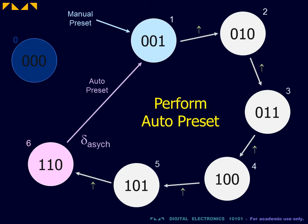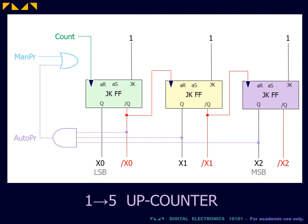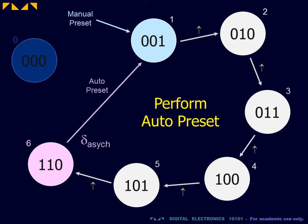For the modified design, however, both the manual preset and the auto preset must force the counter into the new initial state. This is achieved by using a combination of the asynchronous reset inputs and the asynchronous set input for each flip-flop. In our example, we wish to preset to the 0 0 1 state.